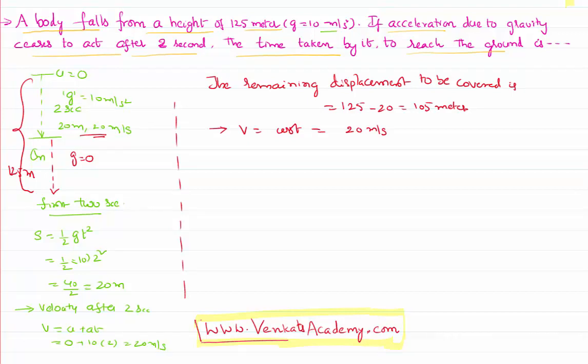Now, with a constant velocity, it has to cover some distance. Again, use the formula s equal to ut plus half a t square. The s that has to be covered is 105, u is nothing but 20, how much time it takes, we have to calculate.